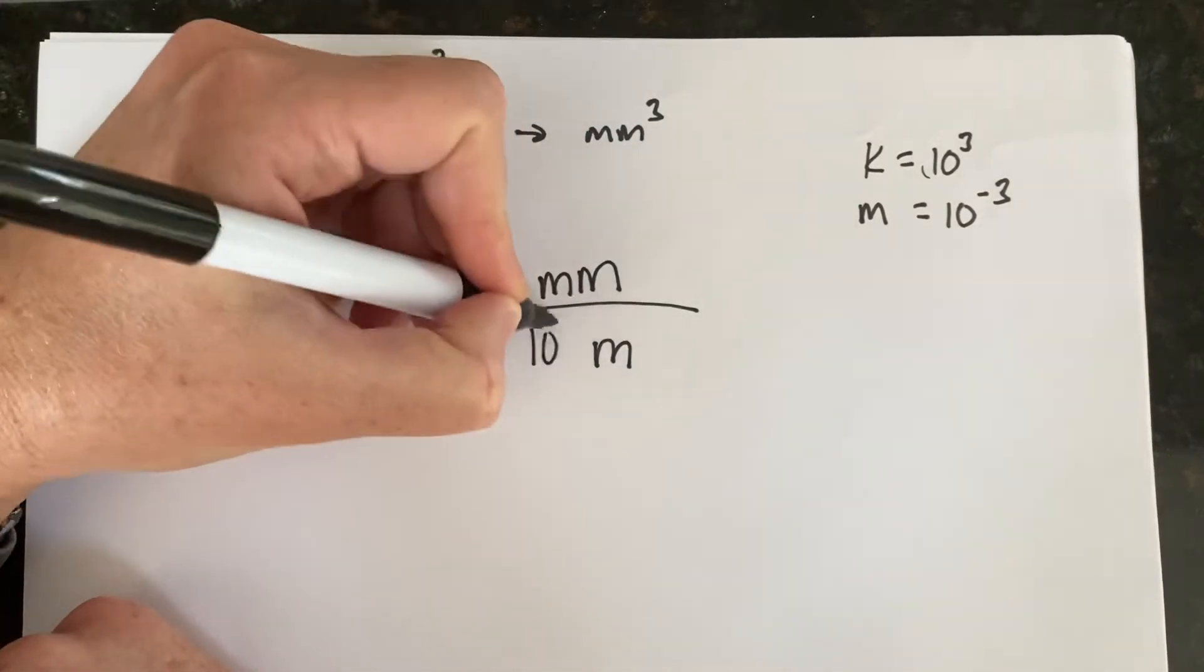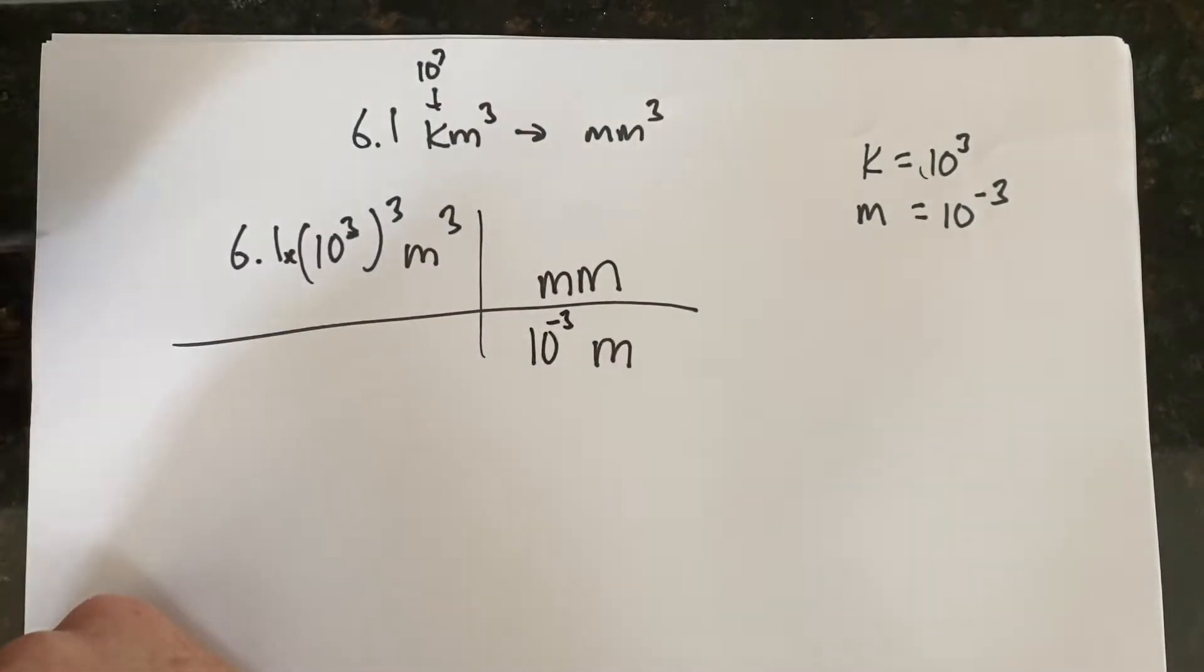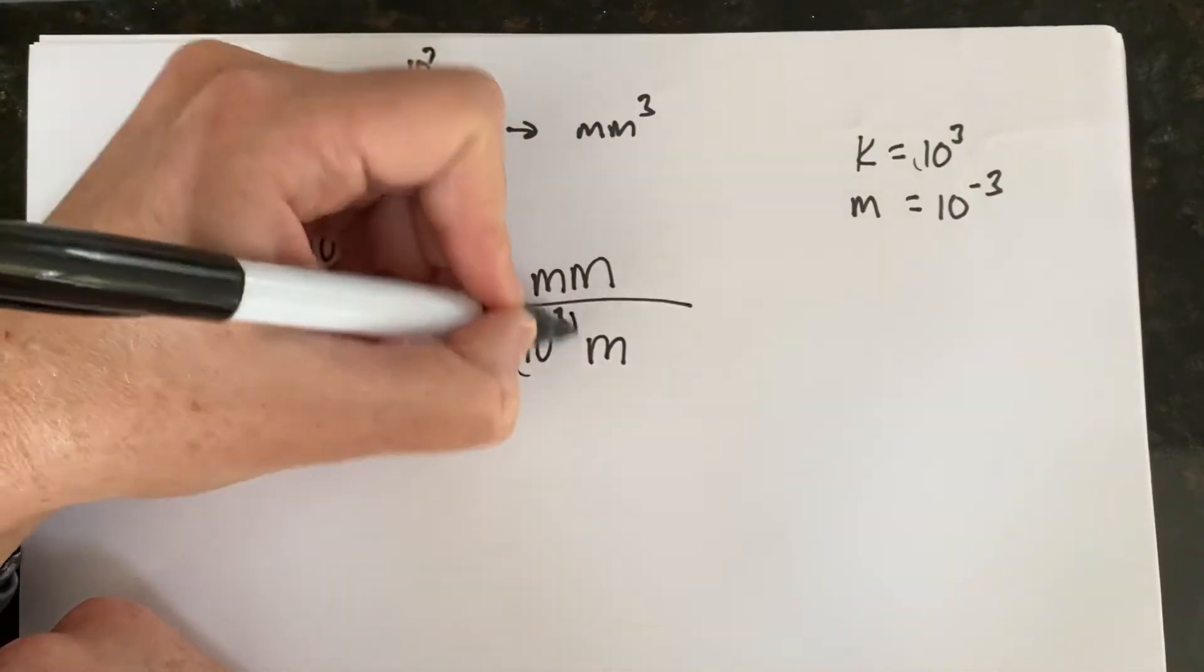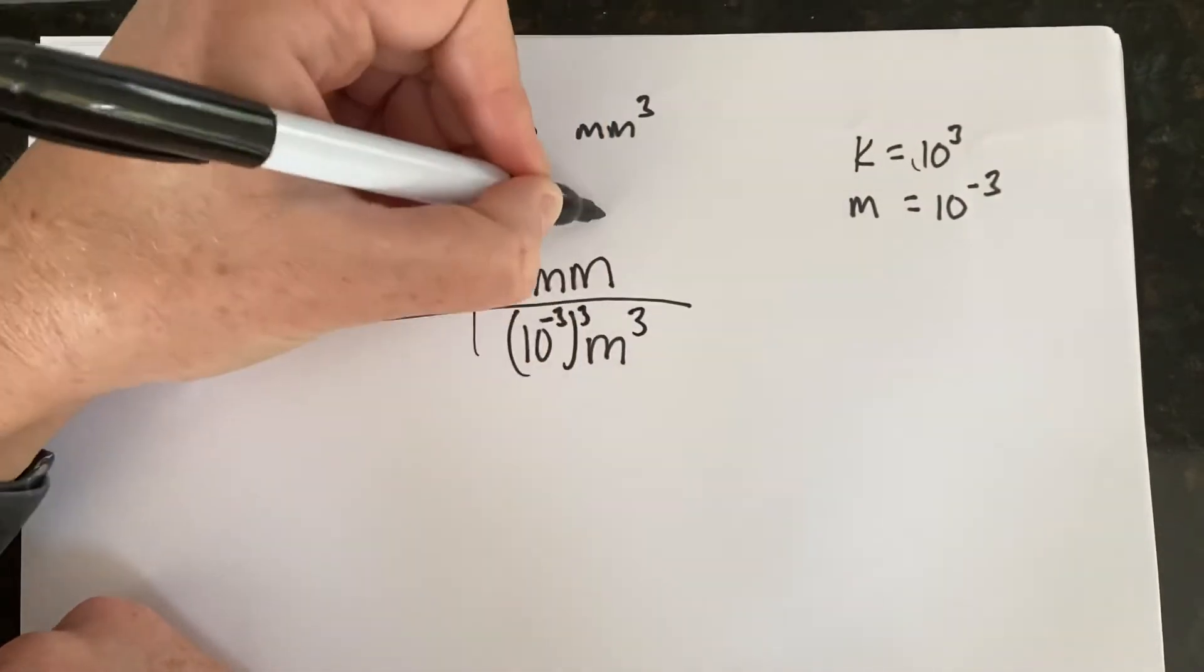Milli is equal to 10 to the negative third. And again, this is cubed, so we're going to cube this, cube that, and cube the milli.